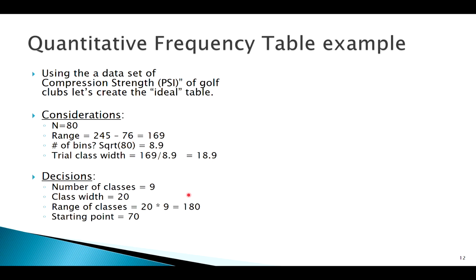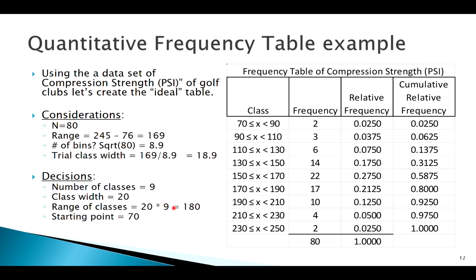So we can't have 8.9 bins, right? So let's say we wanted to do nine. Let's pick a nice round number of 20 here. So 20 class width times 9 gives me 180. My minimum is 76, so let's start at 70. 180 should cover the entire range. So these are my nice, neat numbers that I would like to work with and create a frequency table that looks like this.